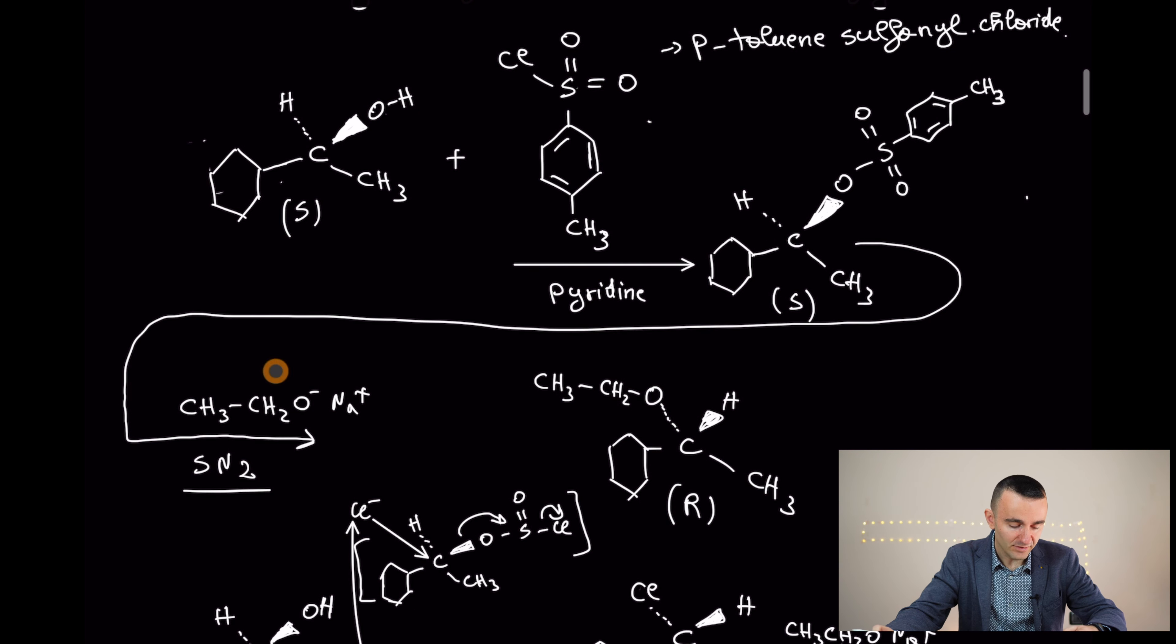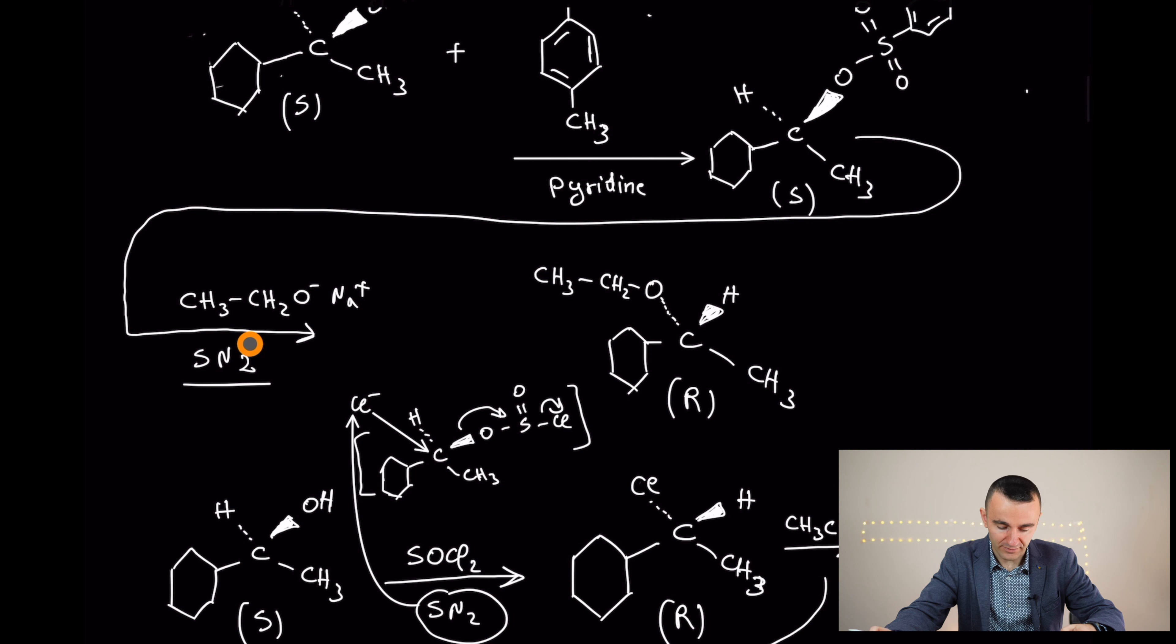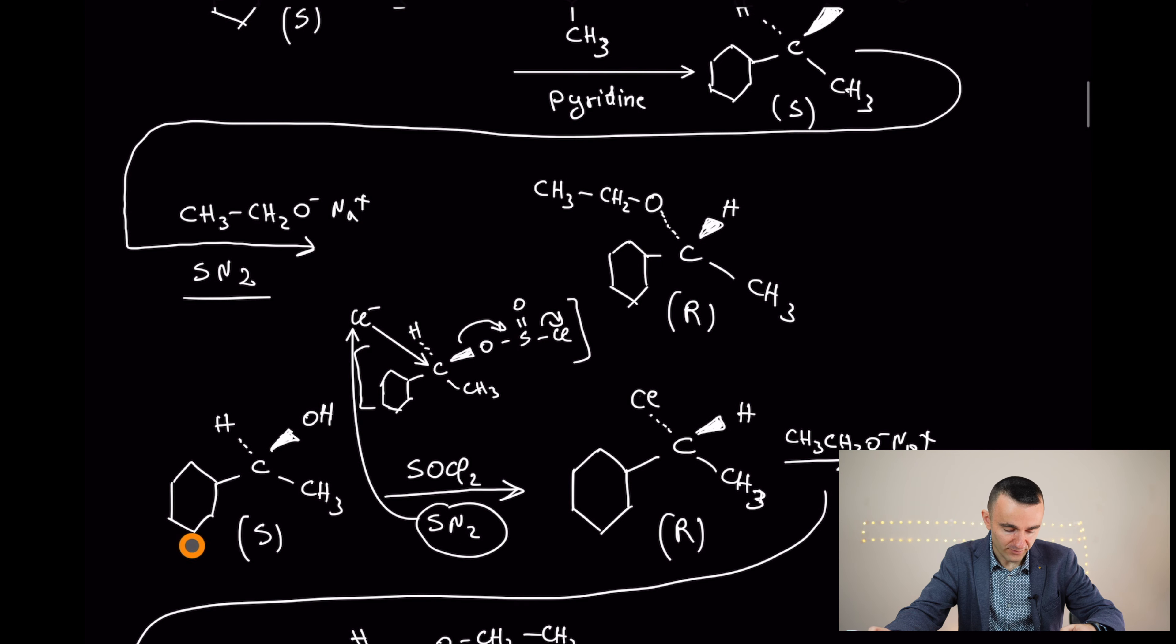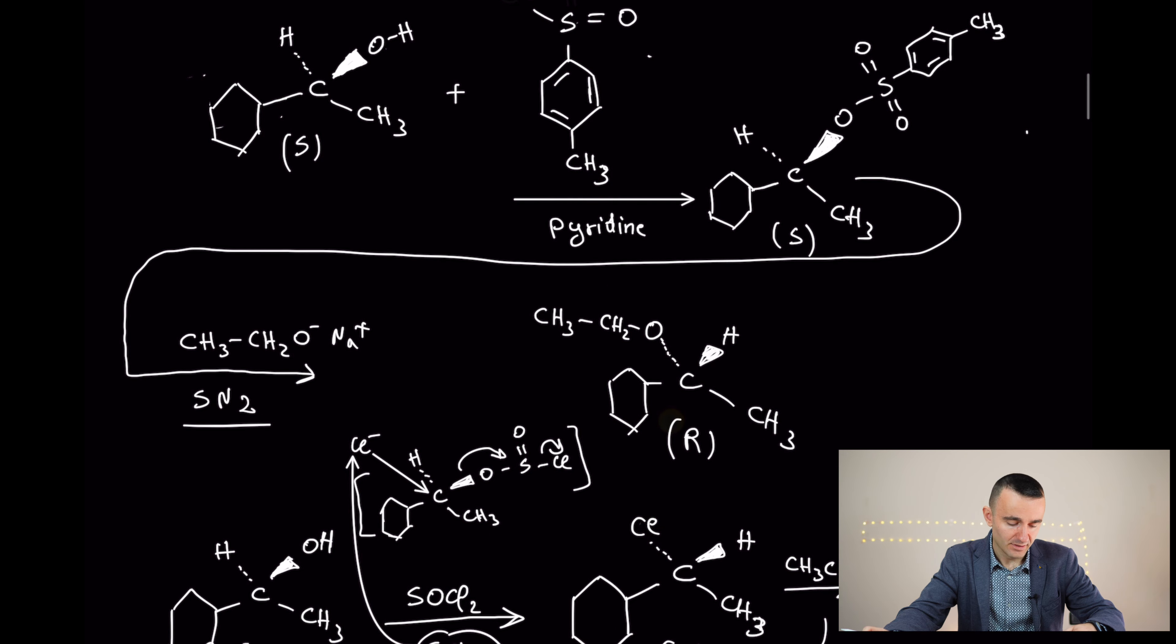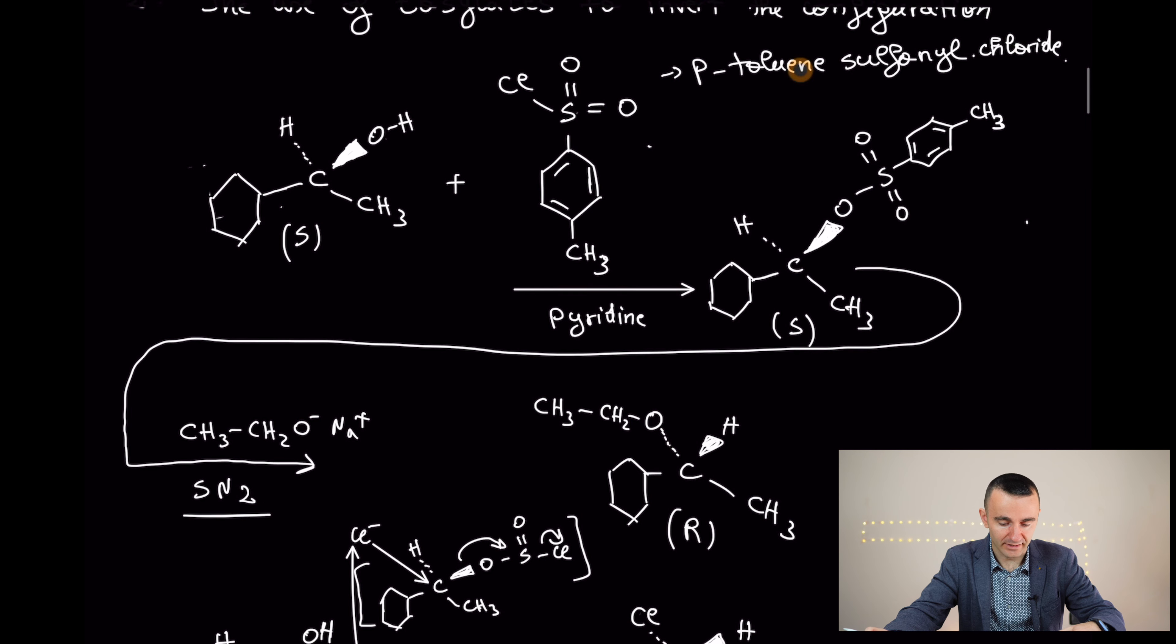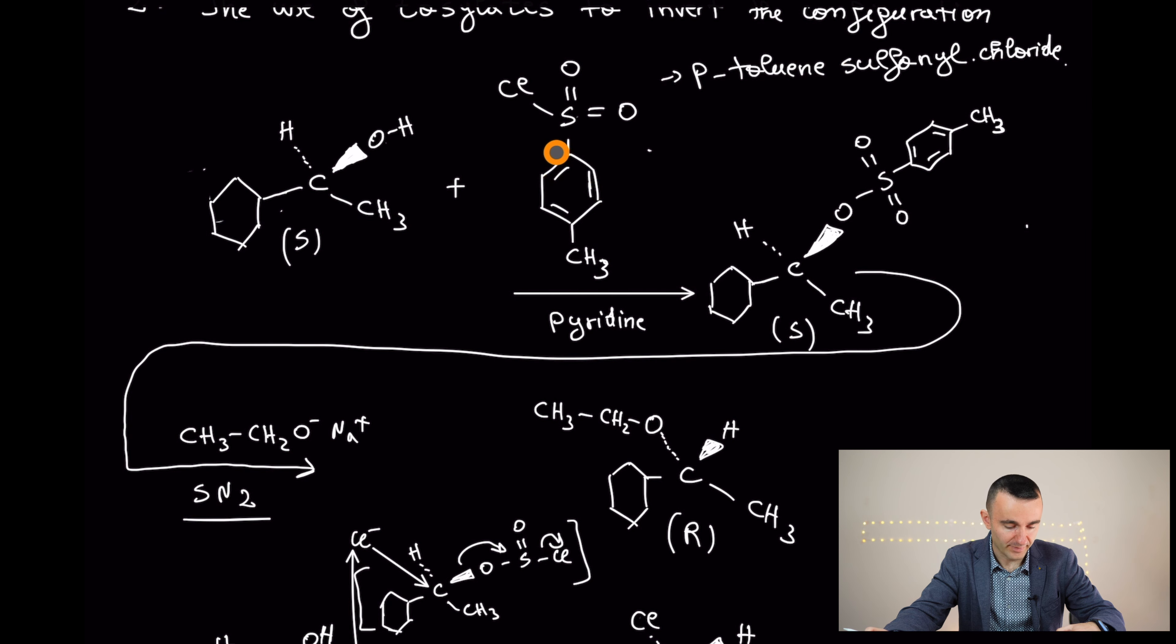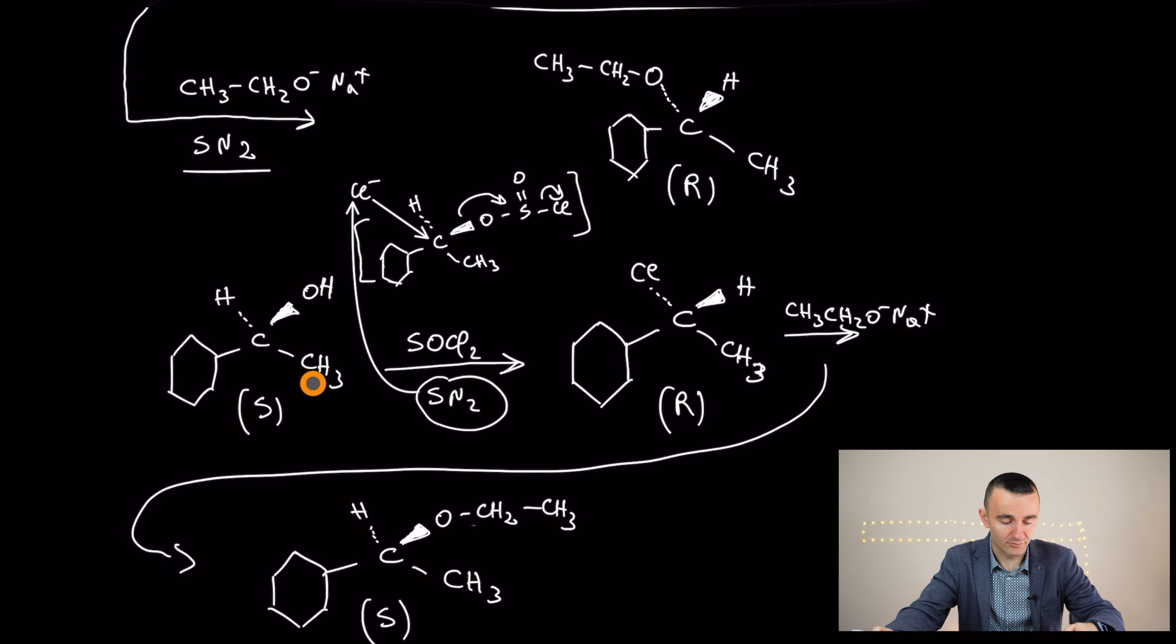what is going to happen is going to invert the configuration from S to R. Right? And if you do that straight without this tosylate compound here, it's going to be the final product with the same configuration as the first one.